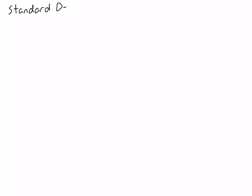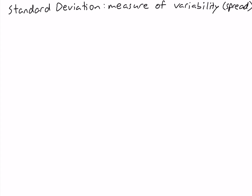Standard deviation is a measure of variability or spread that's in the same units as the original data. So whereas the variance is not in the same units as the original data, the standard deviation is in the same units as the original data.